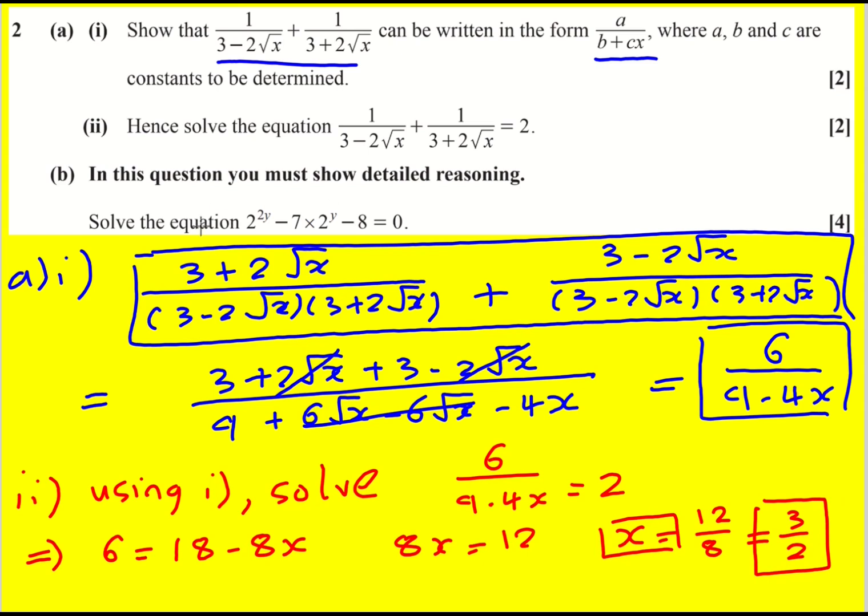Now we're asked to show detailed reasoning to solve this equation. It's actually a hidden quadratic in 2 to the y. So it's up to you. You can either factorize it in terms of 2 to the y or you can do a little substitution u is equal to 2 to the y because what that will mean is that u squared is 2 to the y all squared and multiply the powers together.